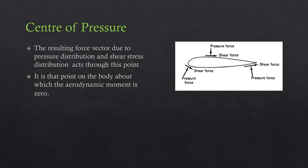Due to the interaction of shear forces and pressure forces, we have a resultant force R. Consider this airfoil — due to the interaction of pressure force and shear force, there is a resultant force R acting at some point. The point along which this resultant force acts is known as the center of pressure. At any other point, such as near the leading edge, there will be both a moment M and the force R. But at the center of pressure, since R acts through that point, there is only the resultant force R and the aerodynamic moment is zero.